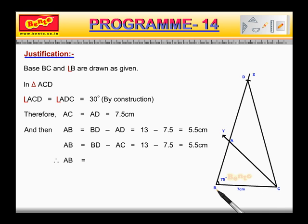Therefore, AB is equal to BD minus AC. AB plus AC is equal to BD. 5.5 plus 7.5 is equal to 13 cm.